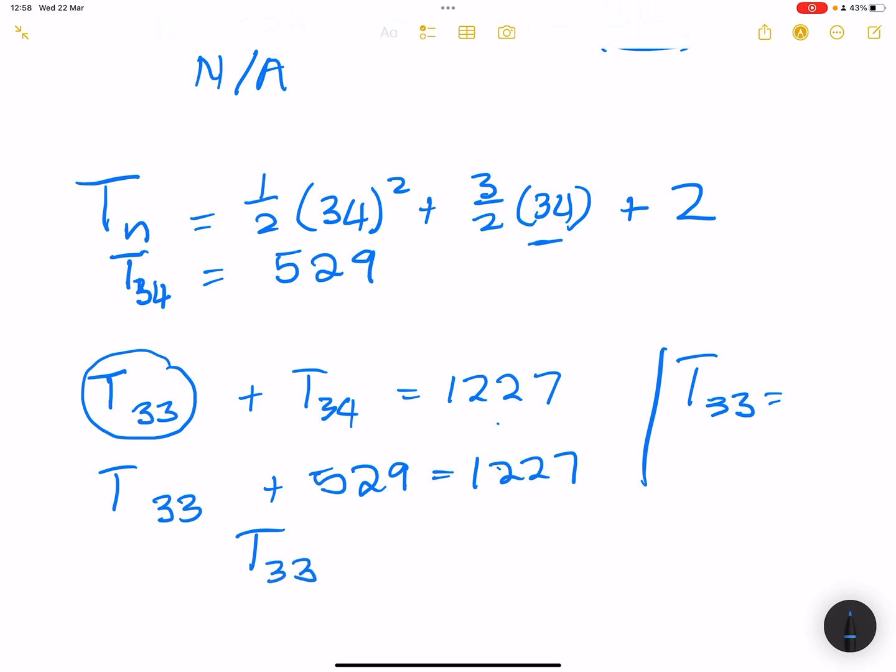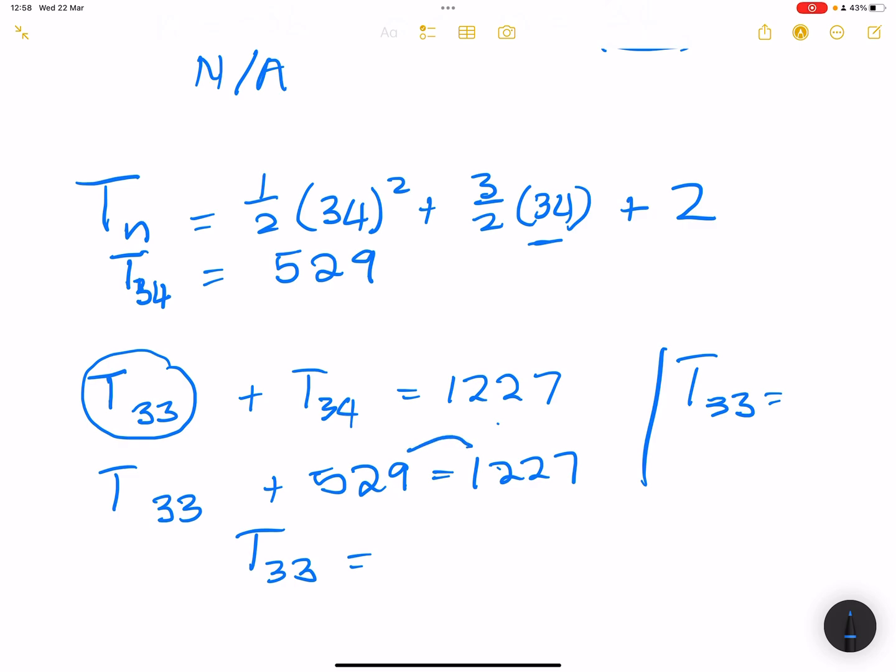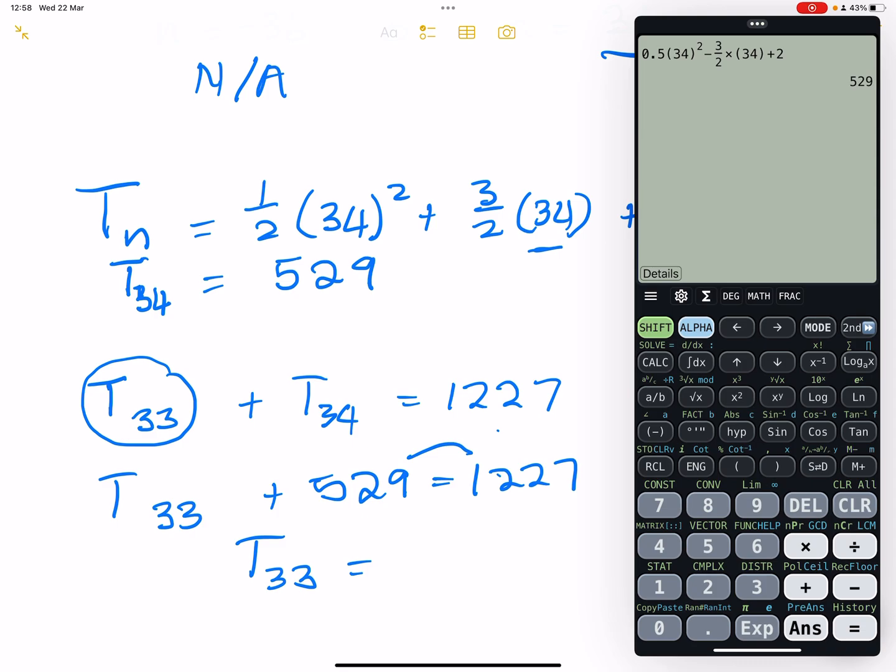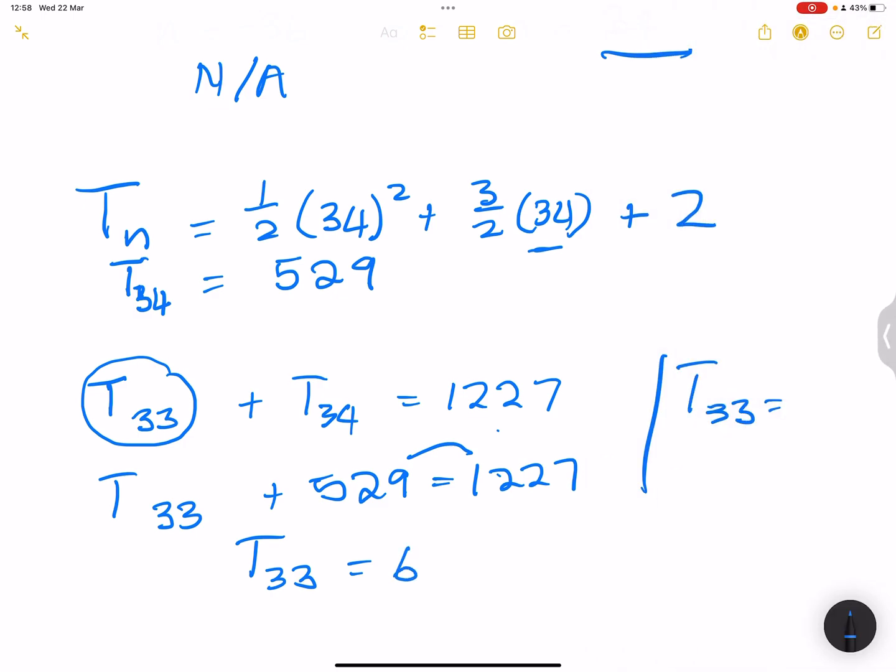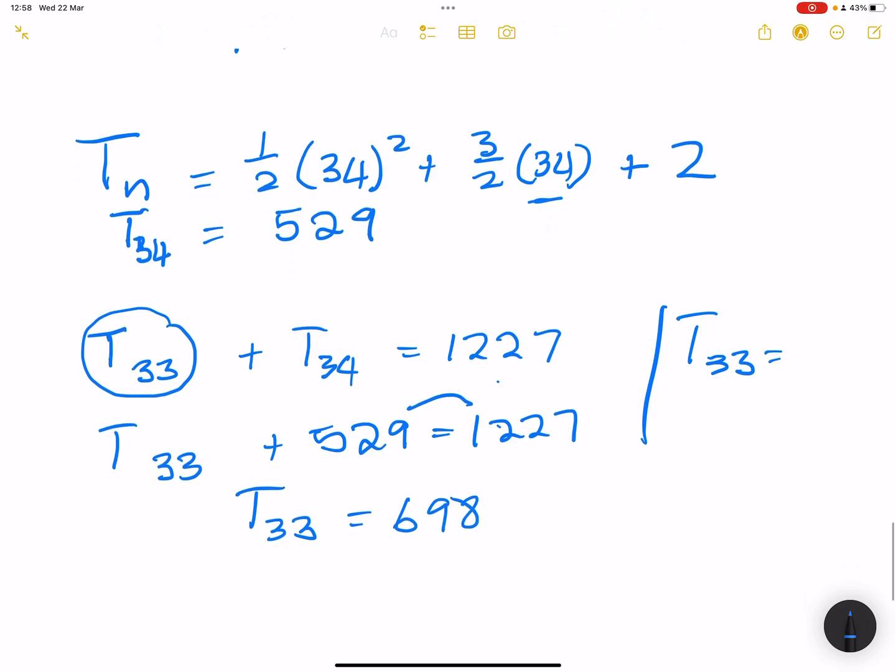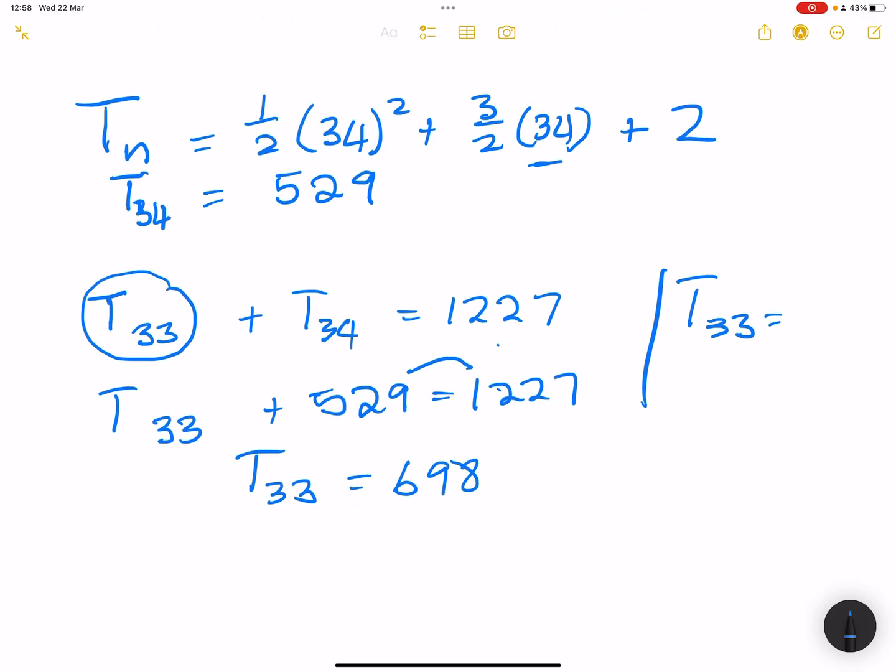Remember, they are consecutive terms. So that would be 1227 minus 529. I get 698. So that's 698. So T33 is 698. And by the way, we need to make sure that when we add those two, they give us 1227.